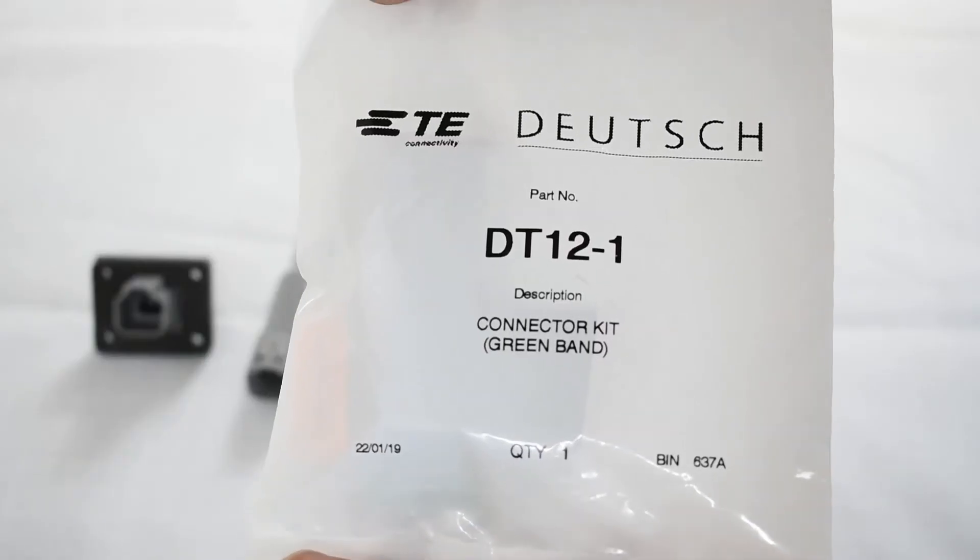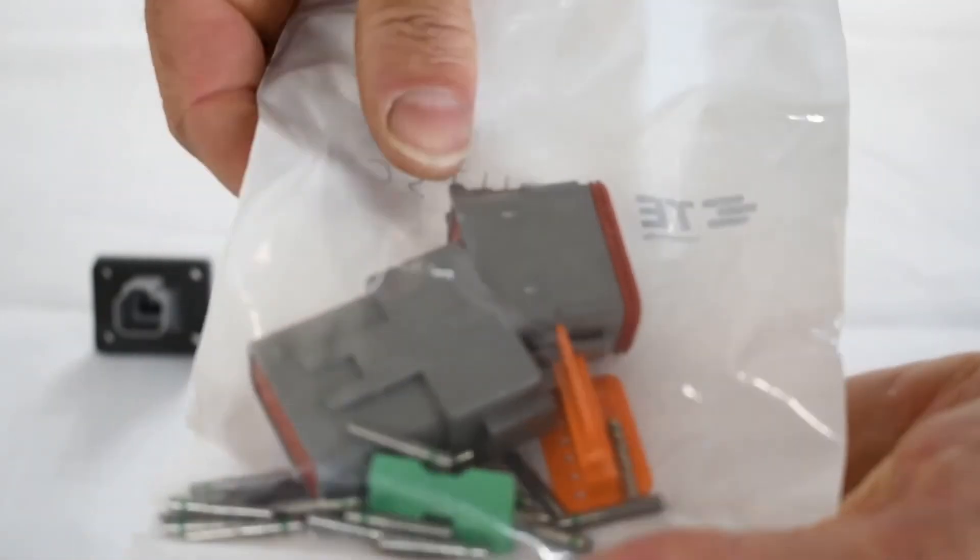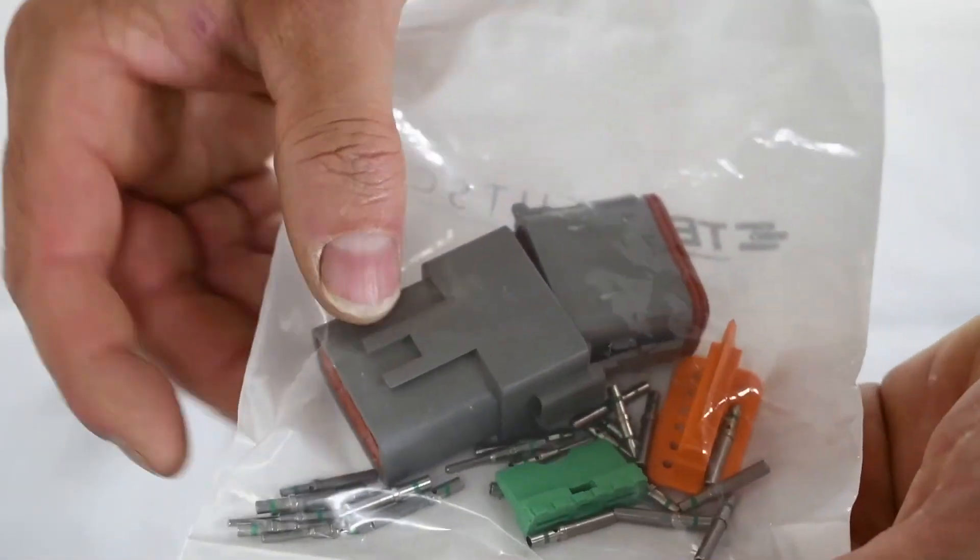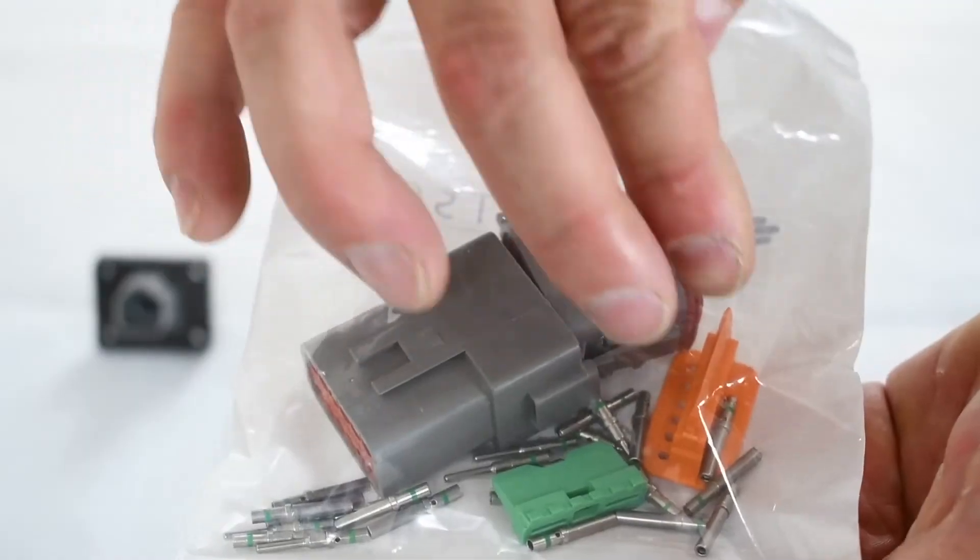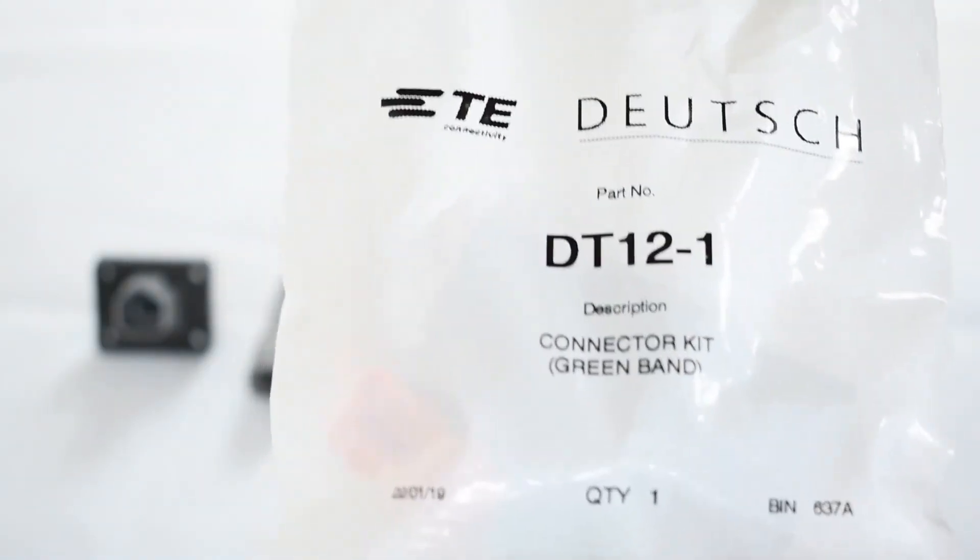This is a DT 12-1. So a complete kit. We call them a grab kit. So you've got your receptacle, your plug, wedge locks, and your Deutsch contacts to suit. Everything you need to make a complete inline connection.